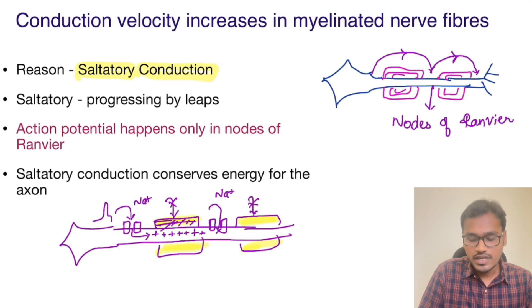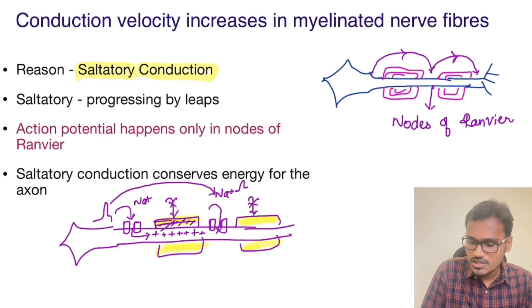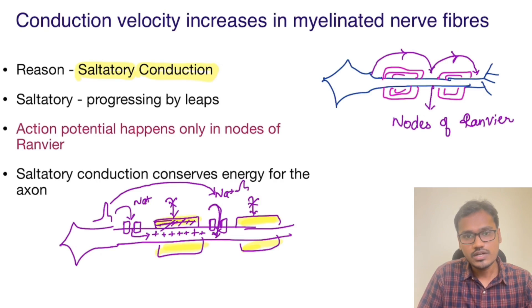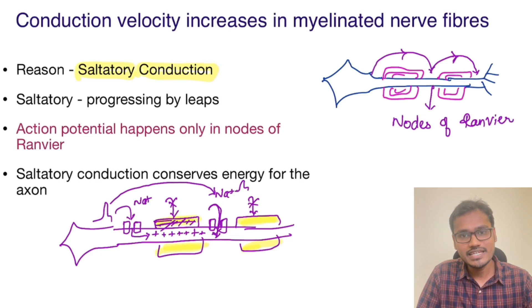That's why it looks like the action potential is jumping from one node of Ranvier to the next, producing the action potential there. Why is it produced only there? Because the sodium channels are present only at the nodes of Ranvier, not in the myelinated region. This is the beautiful reason why conduction velocity is increased in myelinated nerve fibers rather than in non-myelinated nerve fibers. Hope it's clear.